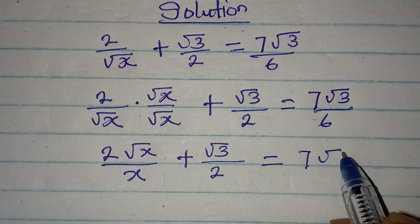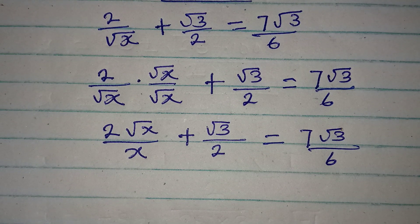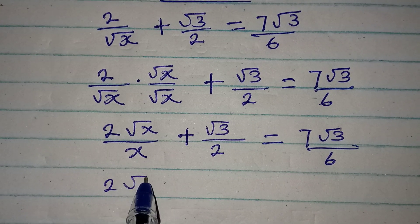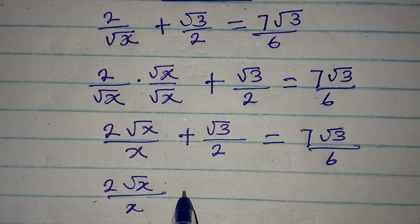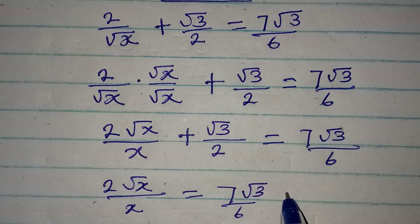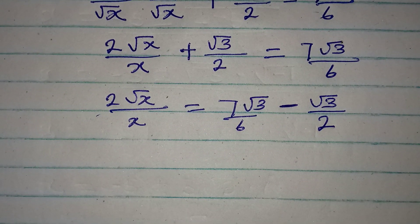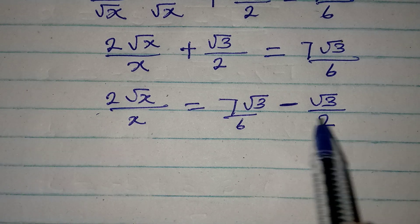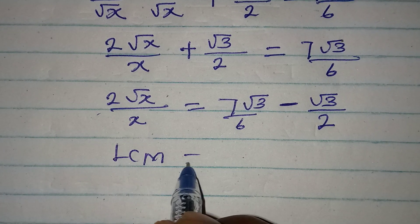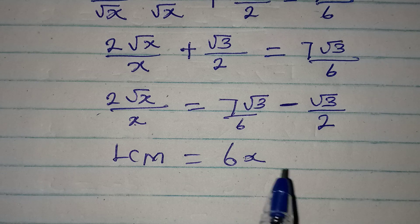Equal to 7 root 3 over 6. Now from here, I can take the root 3 over 2 to the other side, so I have 2 root x over x equal to 7 root 3 over 6 minus root 3 over 2. Now I can find the LCM of everything here — the LCM is going to be 6x, because 2 can go into 6 and x is already here.